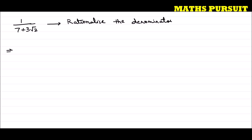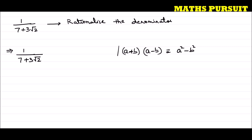Now let us look into the given expression: 1 upon 7 plus 3 root 2. So how can we remove this root 2 from the denominator? In order to remove it, we need to multiply root 2 with another root 2. So for example, if it is a plus b, and I multiply with a minus b, I will get a square minus b square. From this identity we know that (a + b)(a − b) = a² − b². Unless and until we make this one a perfect square, we cannot remove the root from the denominator.